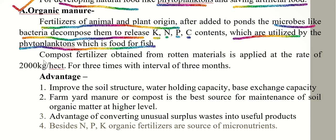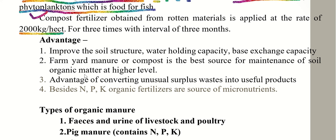Compost fertilizer obtained from root and plant materials is applied at the rate of 2000 kilograms per hectare, three times, with intervals of three months.